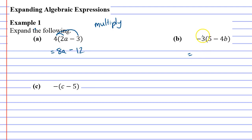Alright let's look at question B. Same thing again, this time the negative 3 connects to the 5 and connects to the negative 4b. Negative 3 times 5 is negative 15.